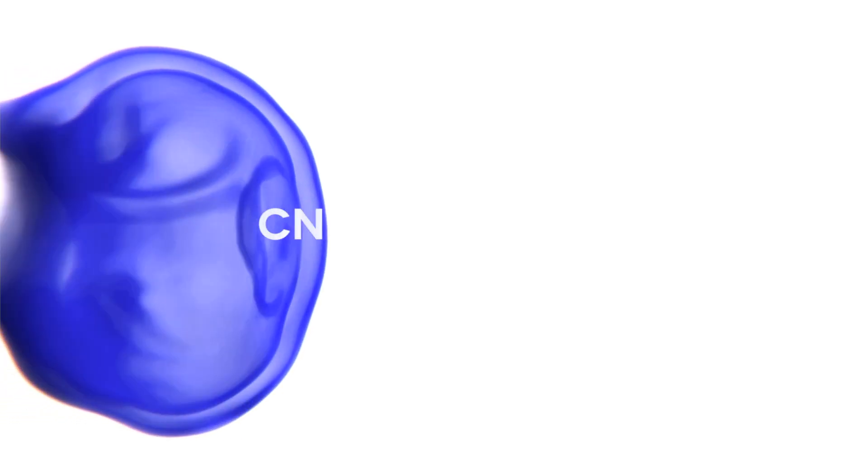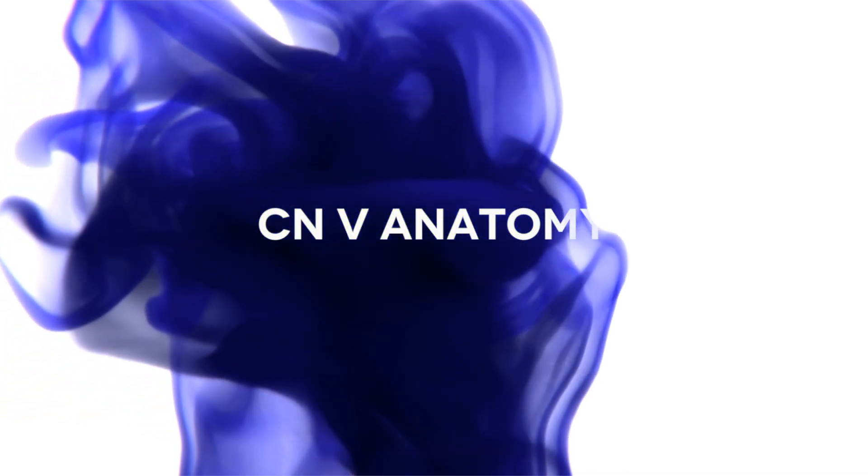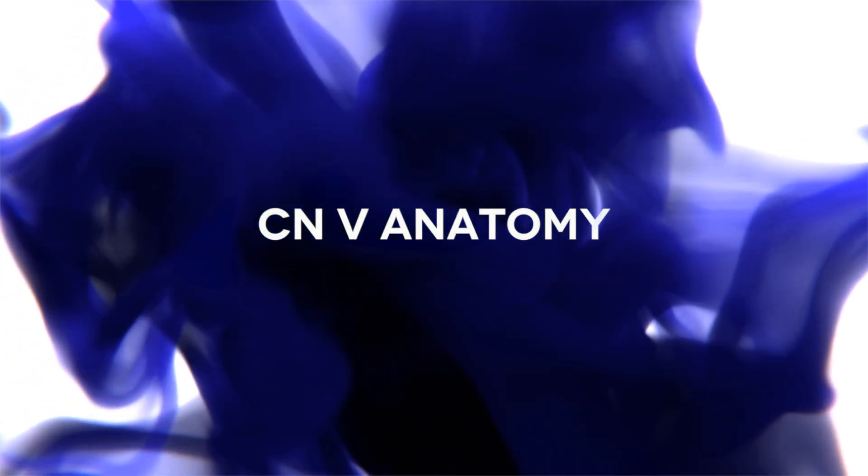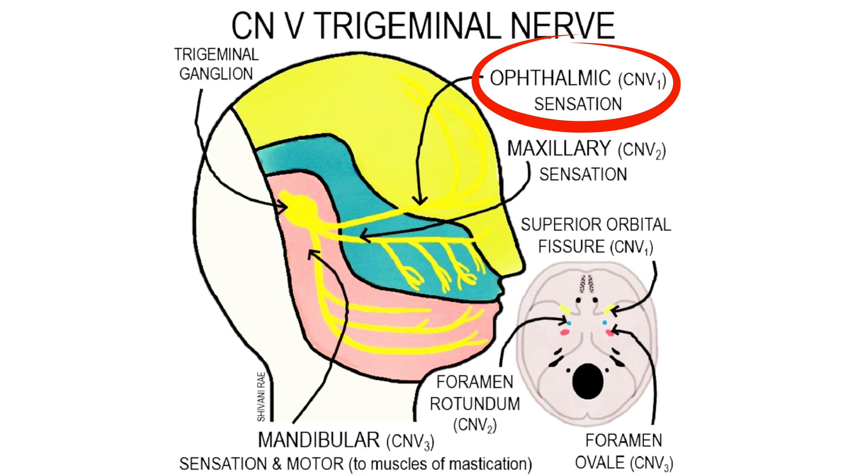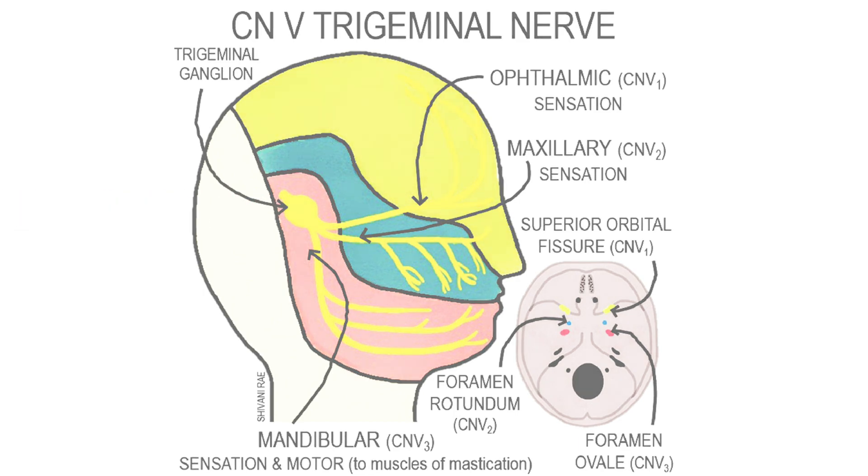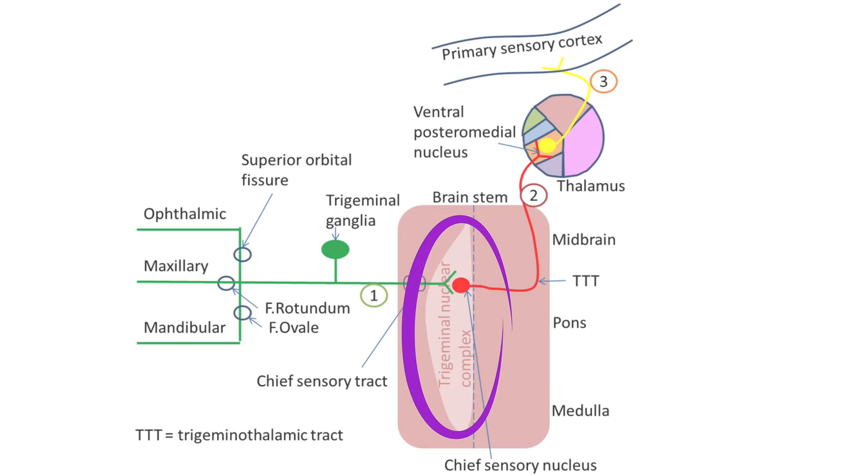We will begin with a brief overview of trigeminal nerve anatomy. The trigeminal nerve is divided into three branches: ophthalmic V1, maxillary V2 and mandibular V3. Their cell bodies are located in the trigeminal ganglia and they make connections with second order neurons in the trigeminal brainstem sensory nuclear complex.